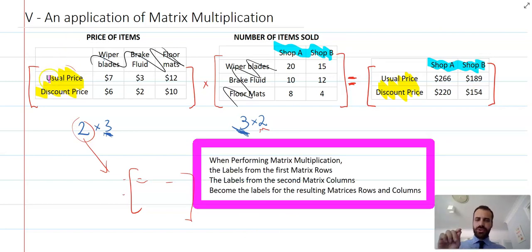That's the big takeaway there. You take the labels from the rows of the first matrix and you take the labels from the columns of the second matrix, and they're going to be the labels for the rows and the columns of the resulting matrix. Matrix multiplication, a great way to take information from two tables and put them together into a meaningful third.